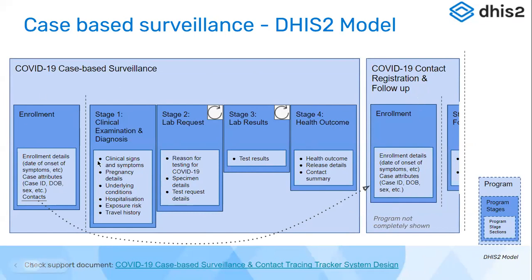In addition to the case surveillance program, there was a follow-up program for COVID-19 contact registration and follow-up. All the contacts mentioned by the respective case were enrolled in the system one by one and linked through the relationships functionality. We will look at how the relationship between index cases and their contacts was used to trace contacts, and how custom web apps leveraged that relationship. Our main program will be the COVID-19 case surveillance program.